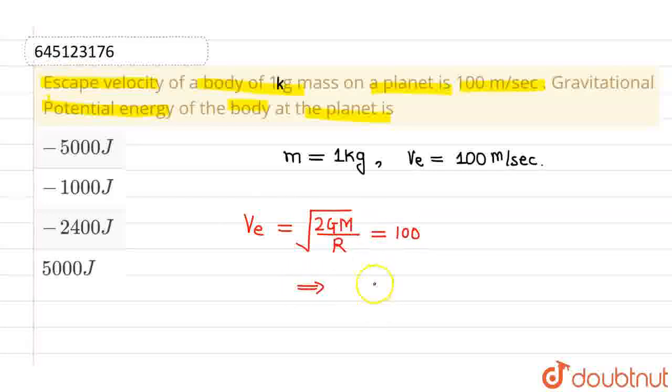If I square both sides, then I will get the value of 2GM divided by R as 10 to the power 4, which can be written as 100 times 100. So from here, the value of GM/R is 5000.